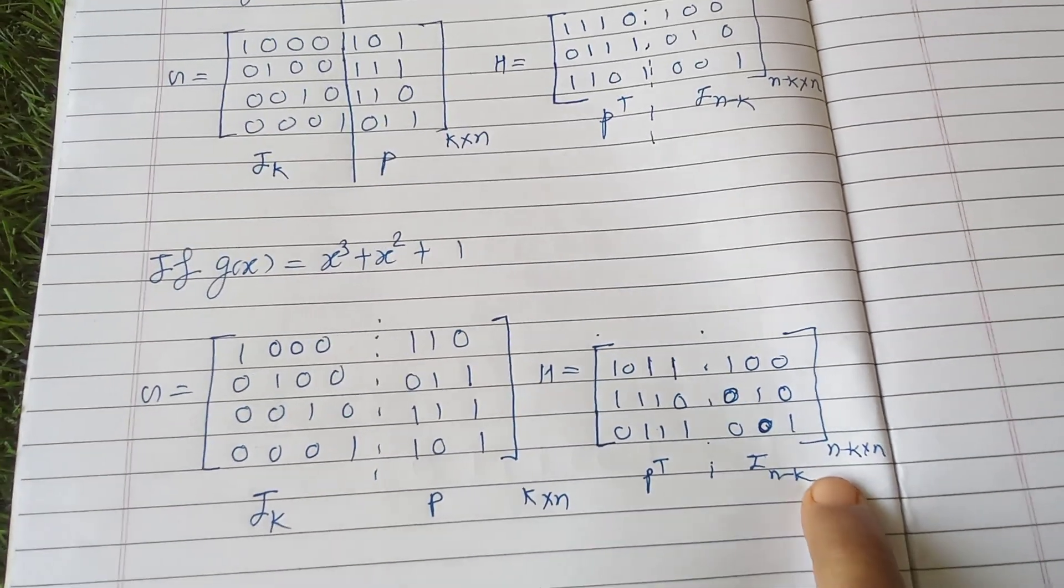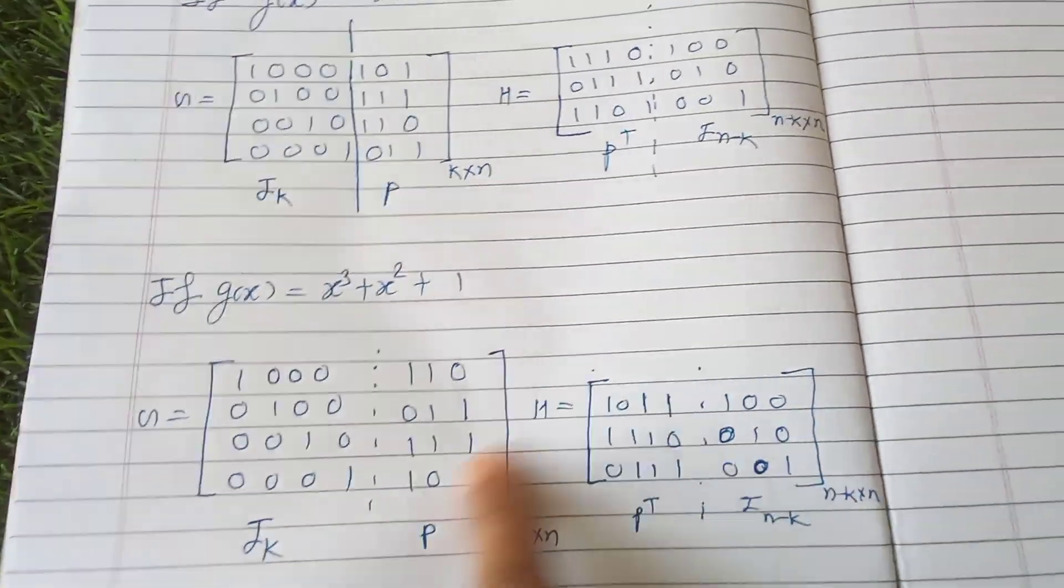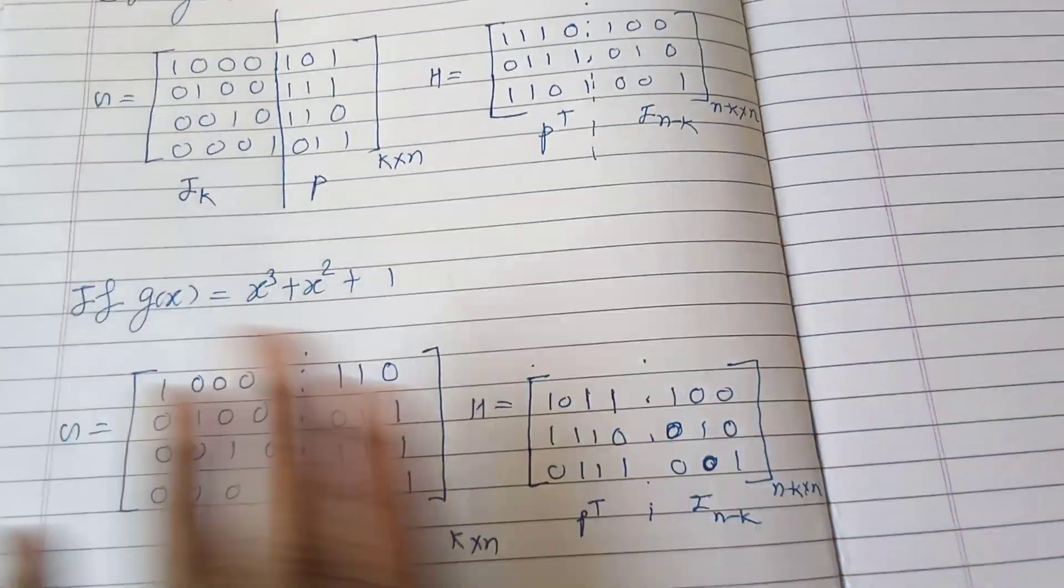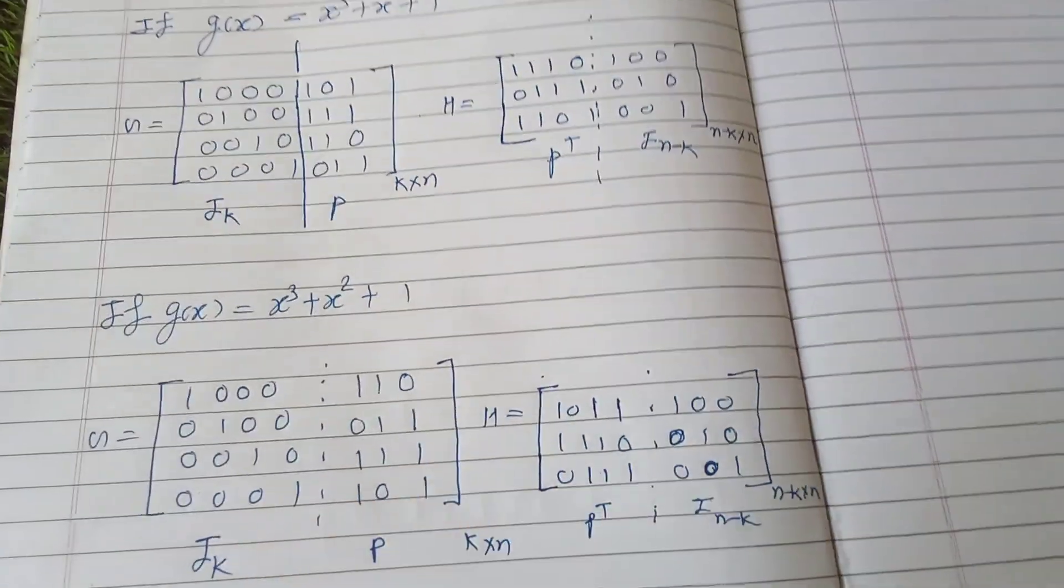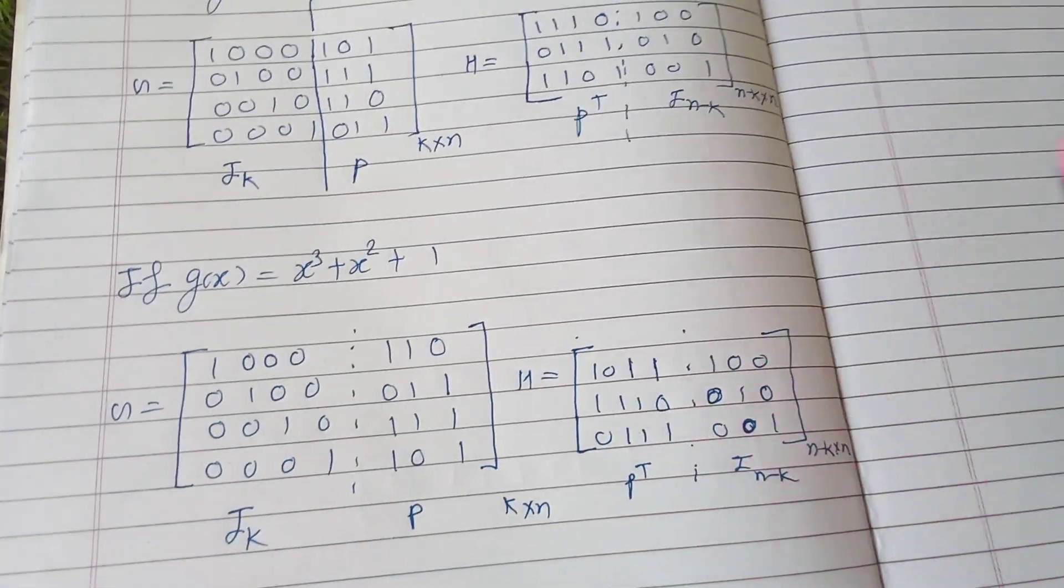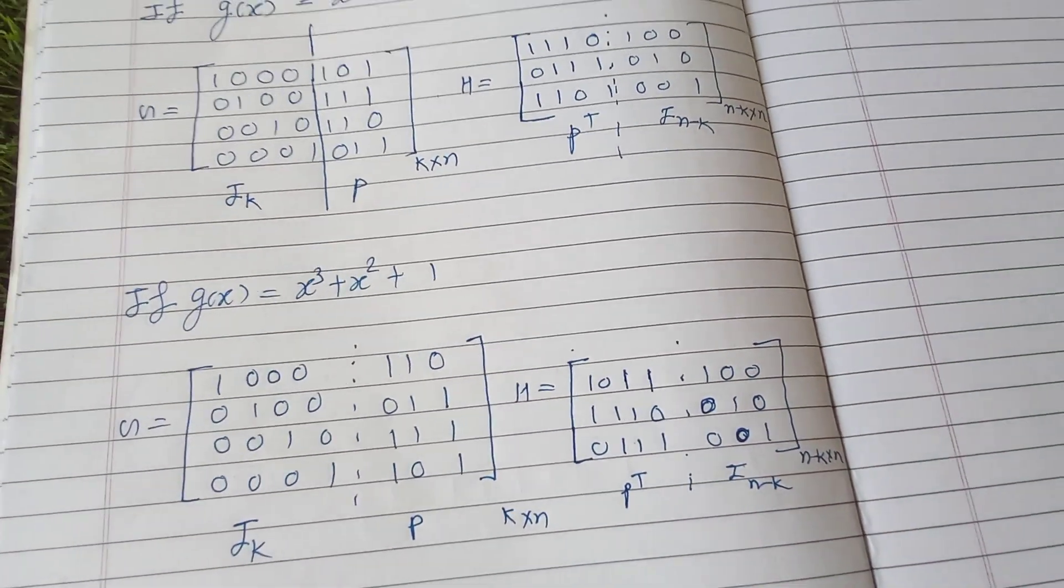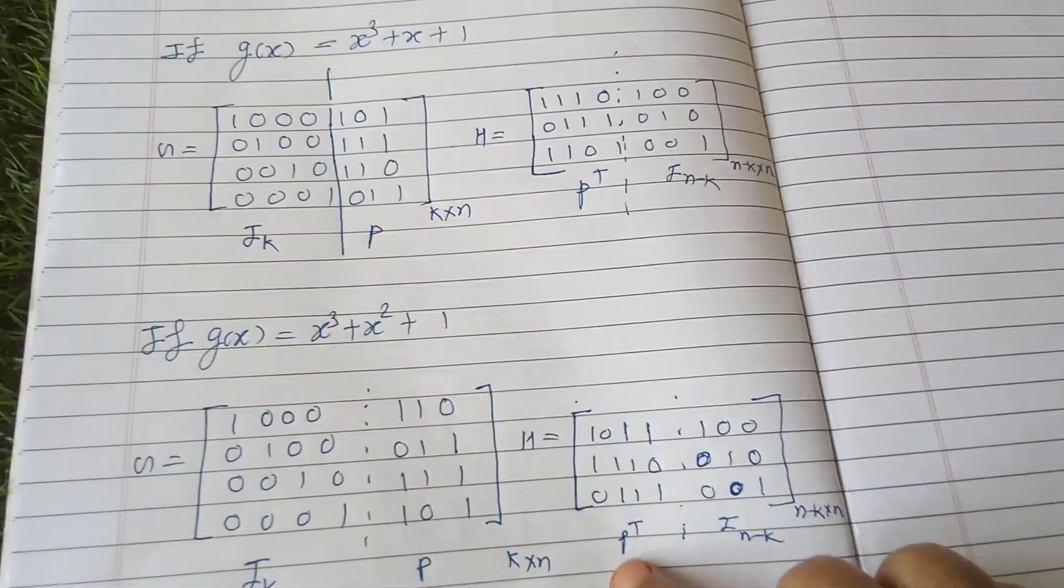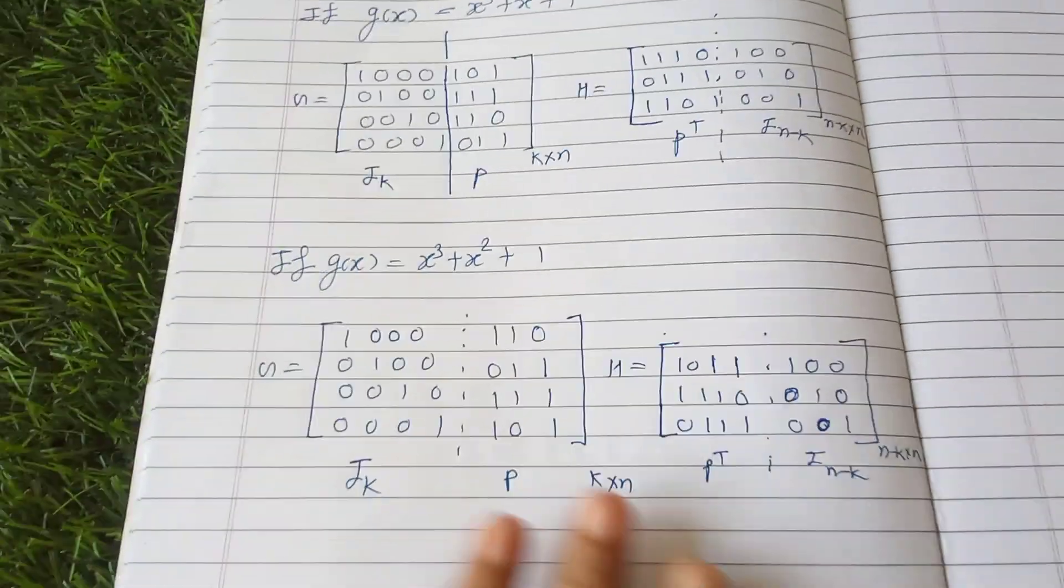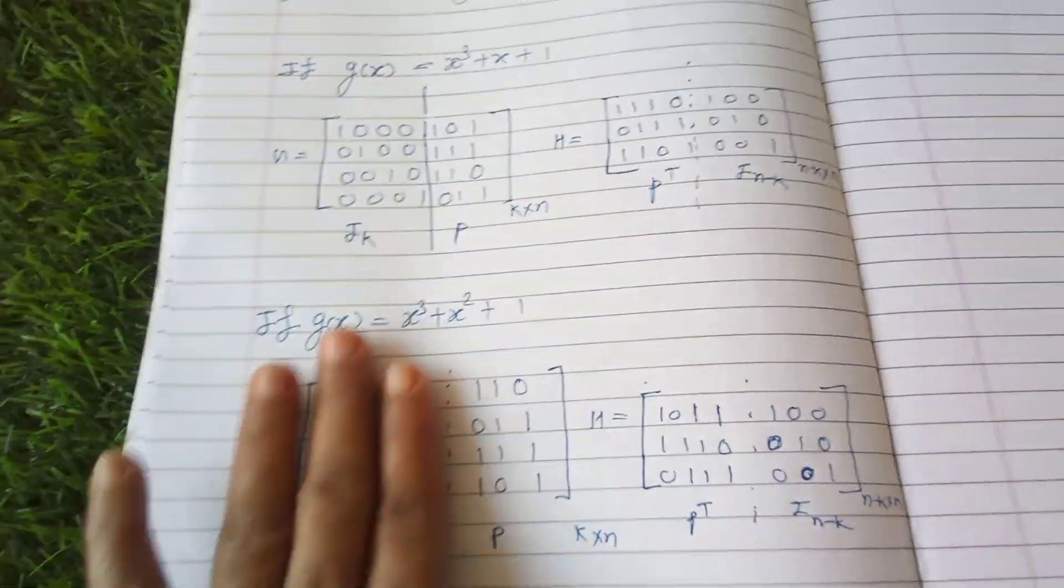So other things are same. You can obtain G matrix from H also. Here I will tell you how to obtain G matrix from H, but that is not asked in university exam. But still, P^T - that means to obtain the generator matrix, you have to first write down I_k. This part you fill as I_k, that means identity matrix of dimension four.